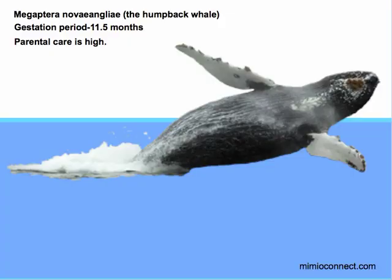Finally on our list is the humpback whale, Megaptera novaeangliae, with a gestation period of 11.5 months. It takes 11.5 months for a mother whale to give birth to her one calf, and she spends several years taking care of this calf, giving it protein-rich milk. Therefore, parental care is very high — very similar to the elephant.